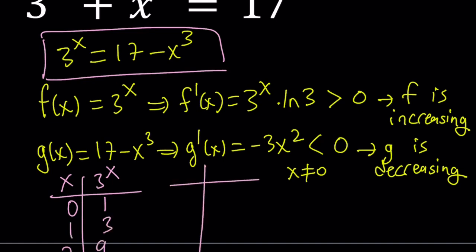And you can make a similar table for the other one, which is 17 minus x cubed. For 0, this is 17. For 1, this is 16. For 2, this is going to be 9. For 3, this is going to be negative 10. Notice that we already talked about it.